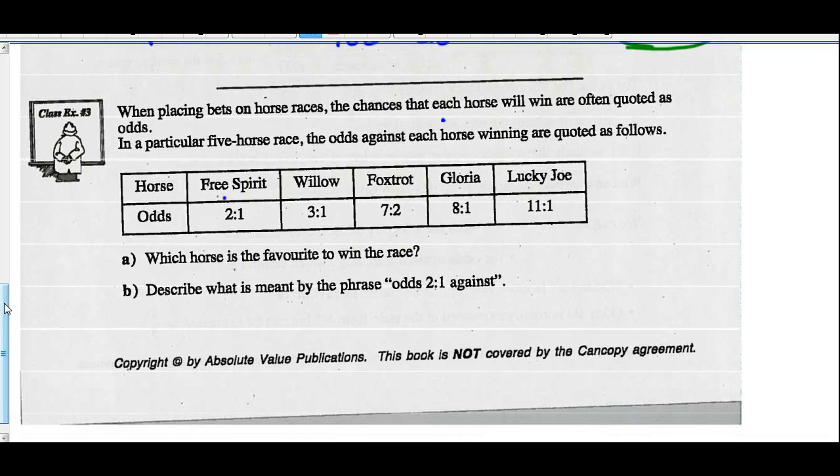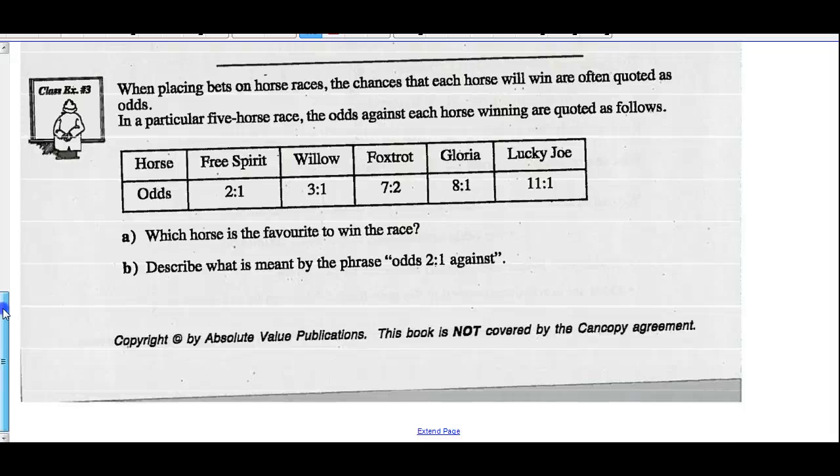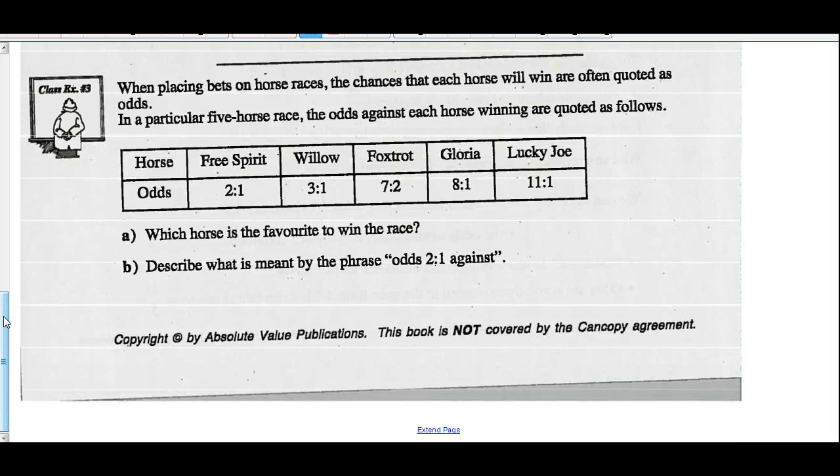When placing bets on horse races, the chances that each horse will win are often quoted as odds. In a particular five-horse race, the odds against each horse winning are quoted as follows. After looking at this, which horse is favored to win the race? The one that has the best chance of winning would be free spirit at 2 to 1.